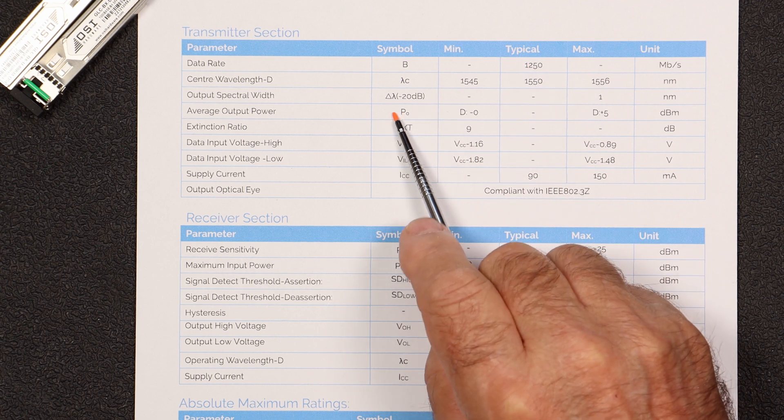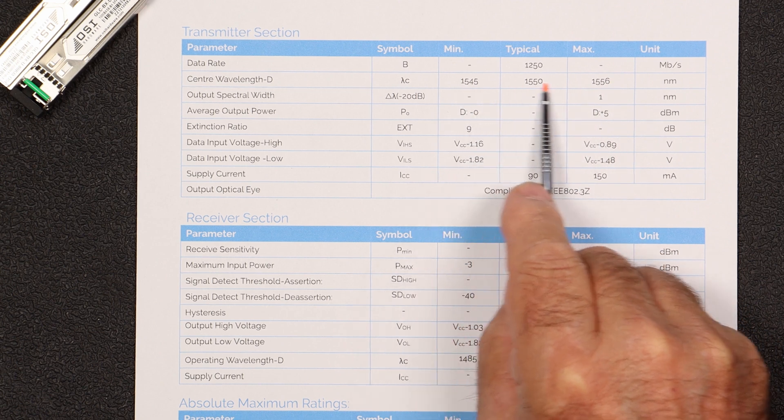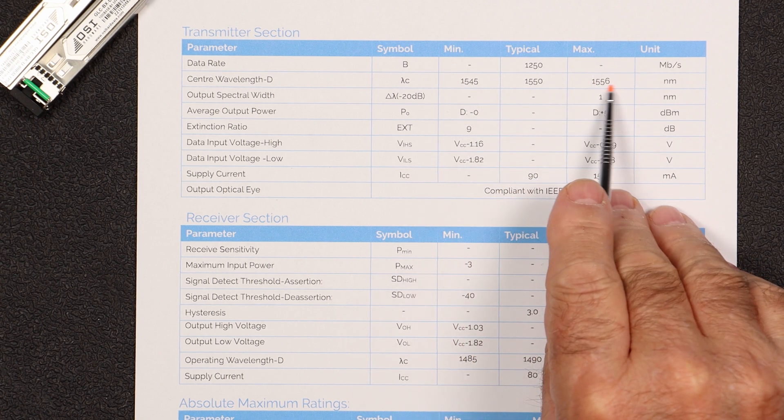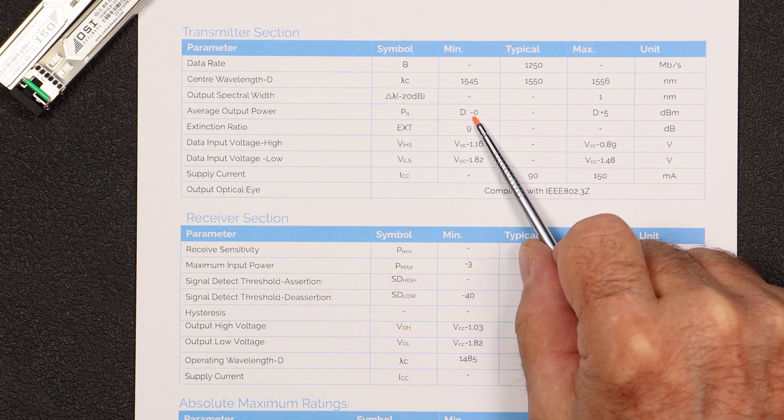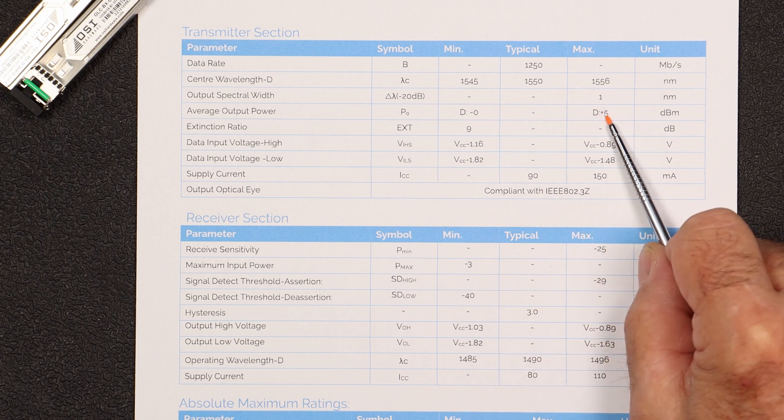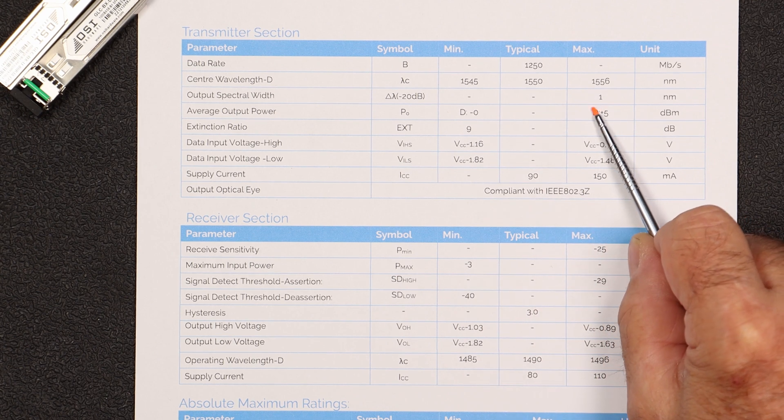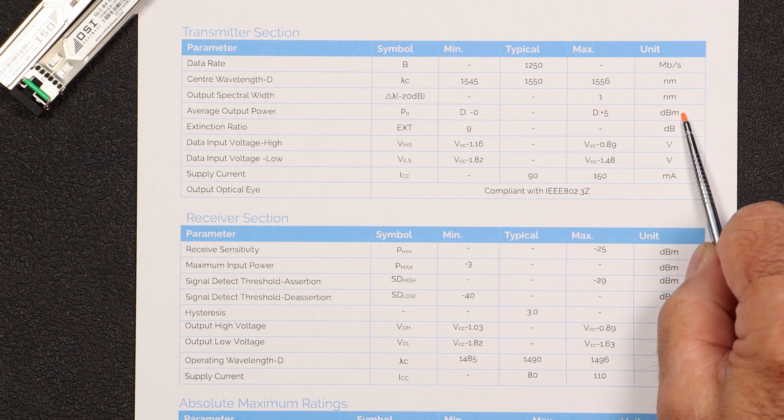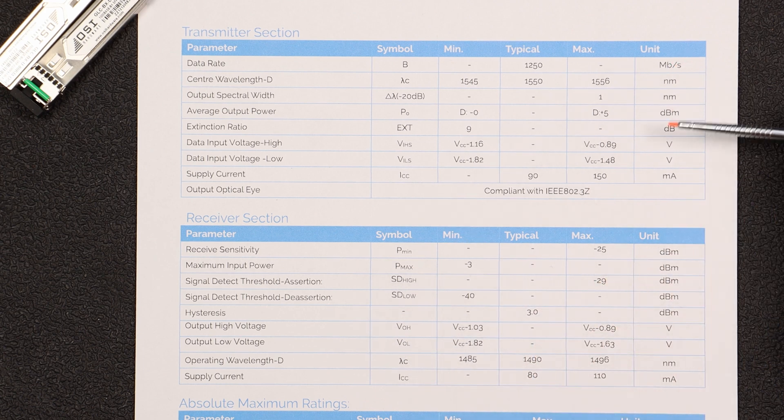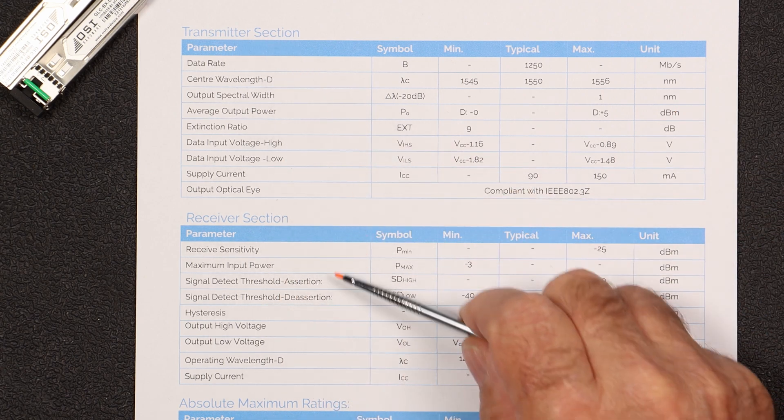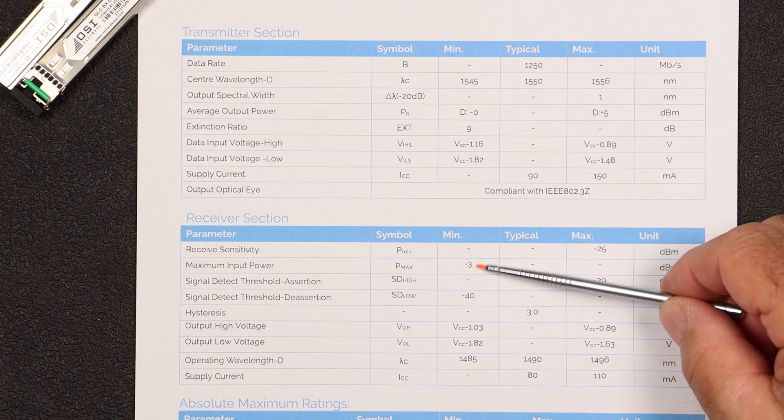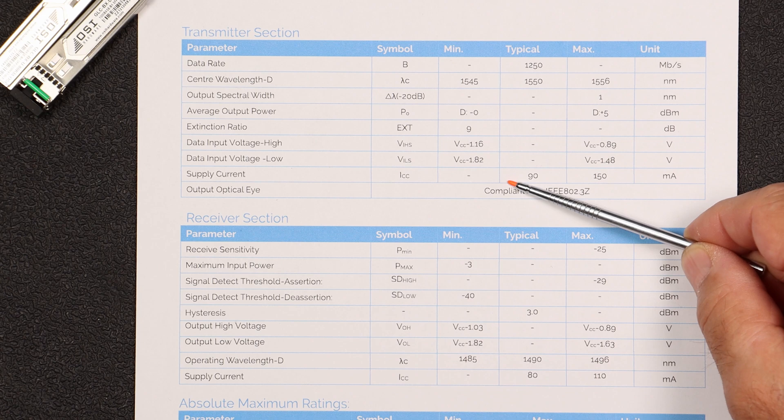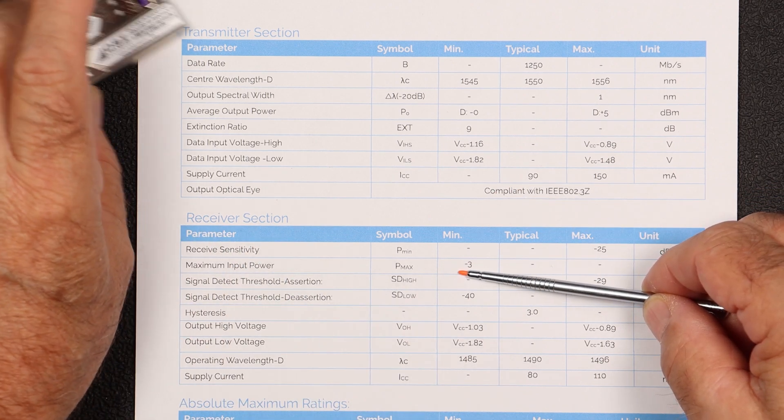So right now we're looking at the specs for this guy, and this guy is going to be very similar. So data rate is, this is a 1 gig, the central wavelength. So this is our what's called our line width. So it goes from 1545 to 1556 with our central wavelength at 1550. This is what we're really looking for, is our average output power. So the average output power minimum is a -0 with a maximum of a +5. So this is the number we're going to use. It's outputting at +5 dBm. So again, what we know about dBm is that's an absolute value. So that's when we're talking about power, that's your absolute.